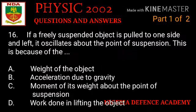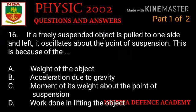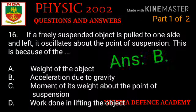Question number sixteen: if a freely suspended object is put to one side and left, it oscillates about the point of suspension. This is because of what? Option A: weight of the object. Option B: acceleration due to gravity. Option C: moment of the weight about the point of suspension. Option D: work done in lifting the object. The right answer is option B — acceleration due to gravity.